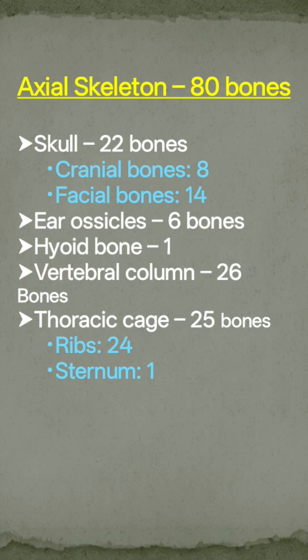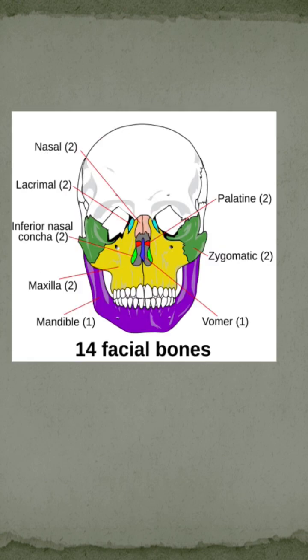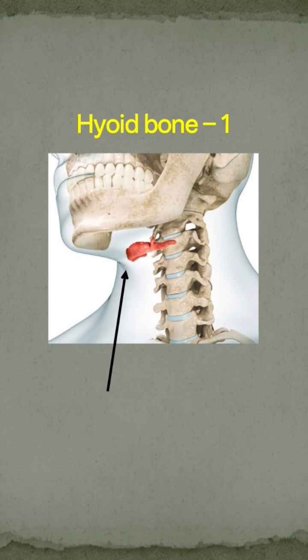Now we will see the pictures of each one by one. First, the 8 cranial bones — the cranium is the part of the skull. These are the 14 facial bones — the face is also part of the skull. The ear ossicles are 6, which are also called auditory ossicles. The hyoid bone is 1, and it is present in the neck.